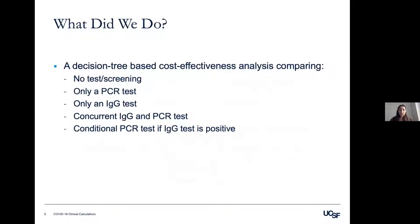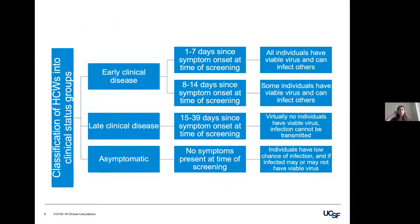We built a decision tree-based cost-effectiveness analysis comparing five options: no testing, PCR only, IgG only, concurrent IgG and PCR, and conditional PCR if IgG is positive. Because the biological markers these tests look at change over time, we stratified our population of healthcare workers into four groups based on symptom status: early clinical disease days 1–7, early clinical disease days 8–14, late clinical disease (more than 14 days post-symptom onset), and asymptomatic healthcare workers who may or may not be infected.